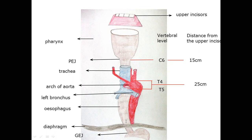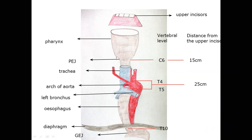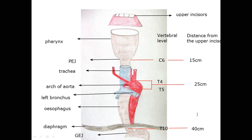The third constriction is where the esophagus pierces the diaphragm. The vertebral level is T10, and the distance from the upper incisors is 40 cm. So the third constriction lies at the T10 vertebral level, 40 cm from the upper incisors, where the esophagus pierces the diaphragm.